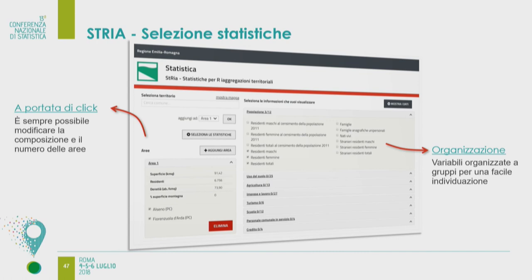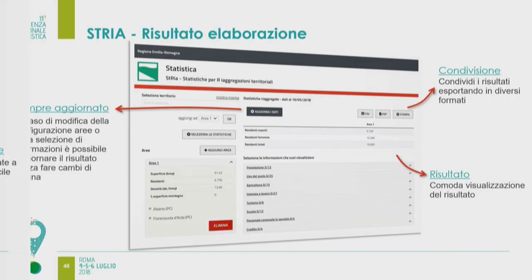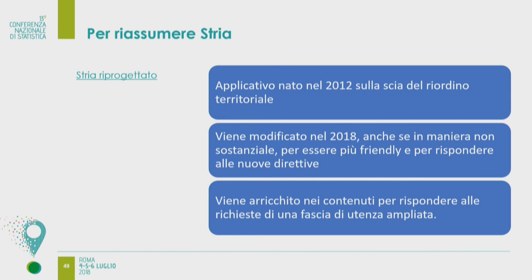Si possono modificare dinamicamente la composizione e il numero delle aree. La visualizzazione per le variabili è di individuazione più facile, con una tendina per ogni gruppo, e si può modificare i risultati senza fare cambi di pagina. In sintesi, STRIA è stato progettato nel 2012 sulla scia del riordino territoriale e viene modificato nel 2018 per essere mobile-first e rispondere a una fascia di utenza più ampia.